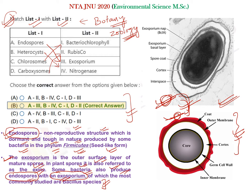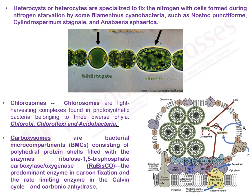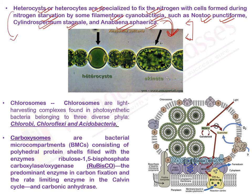The next term is heterocyte — a specialized type of cell which fixes nitrogen. It is formed due to nitrogen starvation in some filamentous cyanobacteria, such as Nostoc, Anabaena, Cylindrospermum, and Anabaena spherica. The main function of heterocyte is nitrogen fixation.